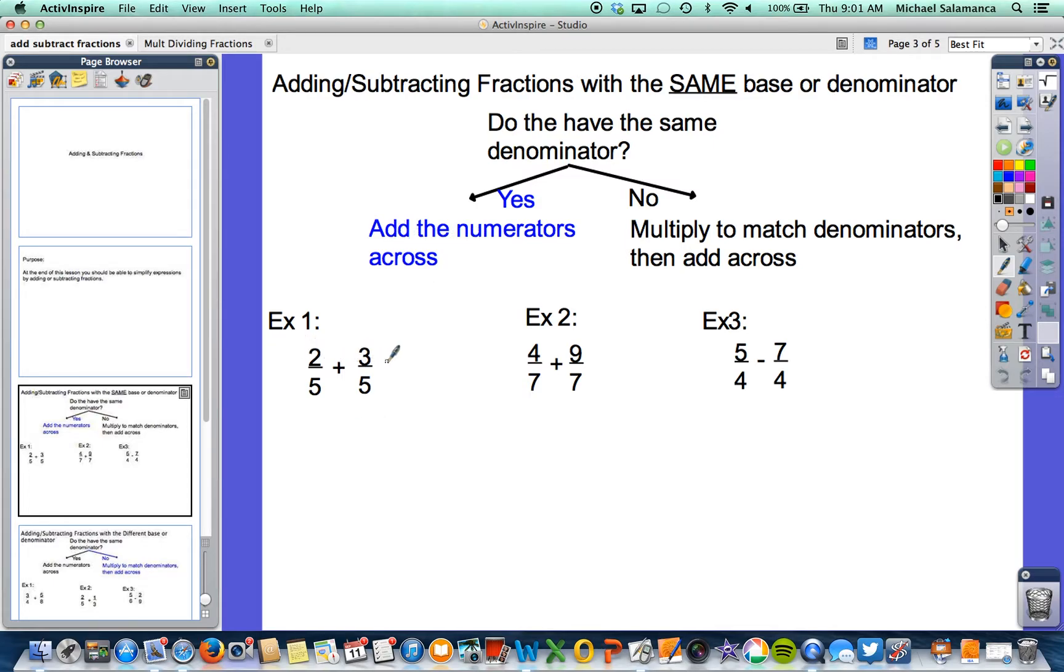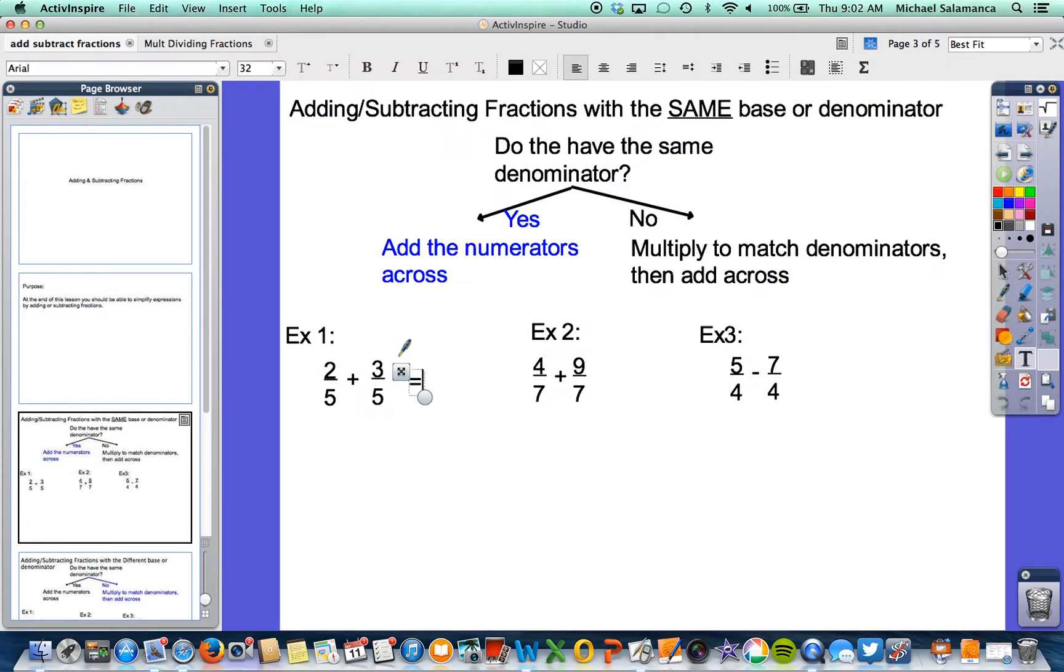So looking at example 1, it says 2 fifths plus 3 fifths. Taking a look at that, they have the same denominator. Therefore this is an easy problem. It is 5 divided by 5. Notice I did not add the denominators, I only added the numerators, the numbers on the top of the fraction. This, if you didn't realize it, simplifies to just 1.